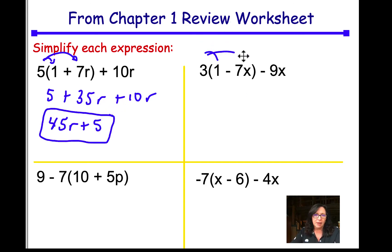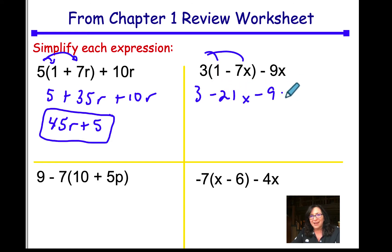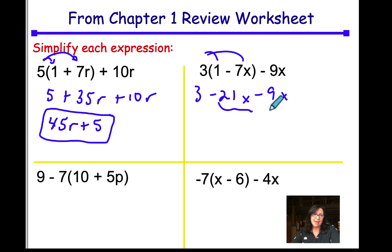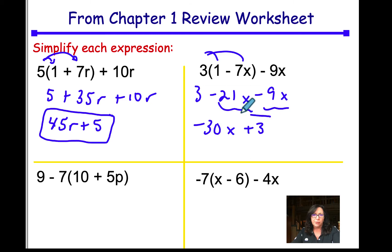Distribute again. We are going to get 3 minus 21x minus 9x. Remember, these are both negative. So we're going to add the negative and the negative, and we're going to get negative 30x plus 3. Box that up.